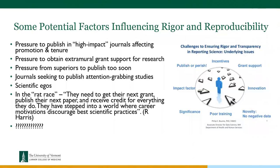One study described in the book involved a group in Boston and a group in California working on the same cancer cells who couldn't correlate their results. They finally sat down side by side to do the work together. They got to a step where the cells needed to be mixed — in California they used a beaker with a stir bar, and in Boston they used a rocker. That difference was causing the discrepancy in their results. When you're talking about multi-center trials, unless everyone is doing things exactly the same way, there are all kinds of problems.